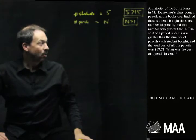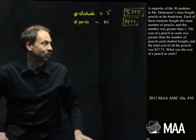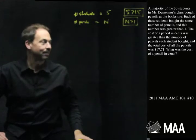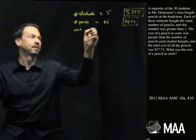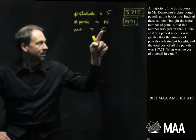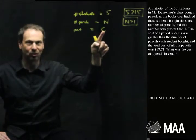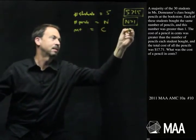Third sentence. The cost of a pencil in cents was greater than the number of pencils each student bought. Okay, so take me a little moment here. The cost of each pencil, I don't know the cost of each pencil. So let's say the cost of one pencil, let's call it C for cost. The cost of one pencil, the cost of each pencil was greater than the number of pencils each student bought. Well, I guess I've got each student buying N pencils, so I say the cost is bigger than N.